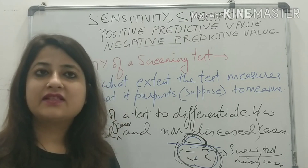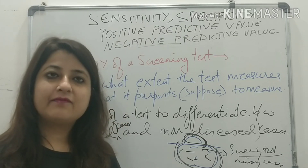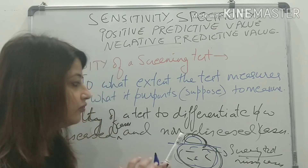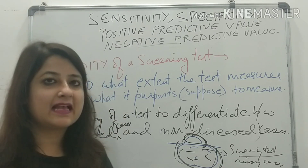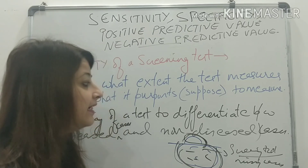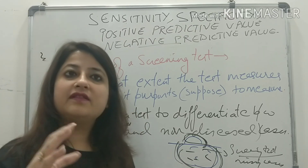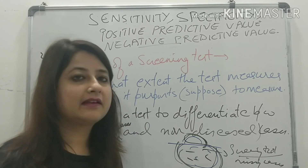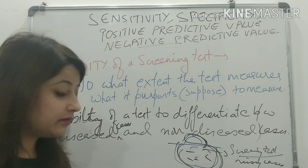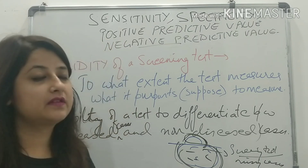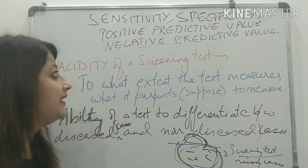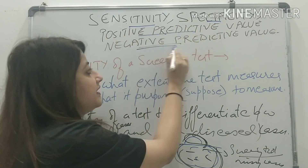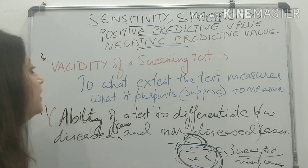If it comes raised, we advise them for FBS and PPBS to confirm and look for more diabetic cases. So this is just an example to tell you what screening is. We will now try to understand the most important terminologies associated with the screening test: sensitivity, specificity, positive predictive value, and negative predictive value.